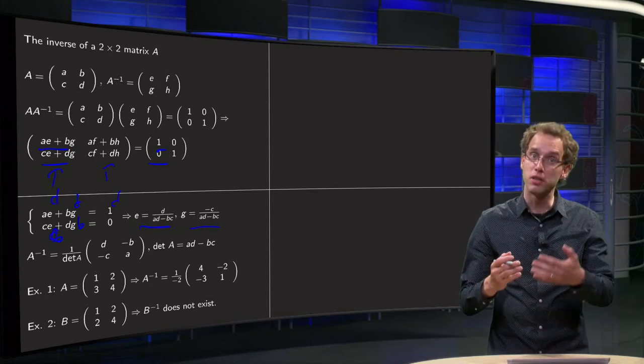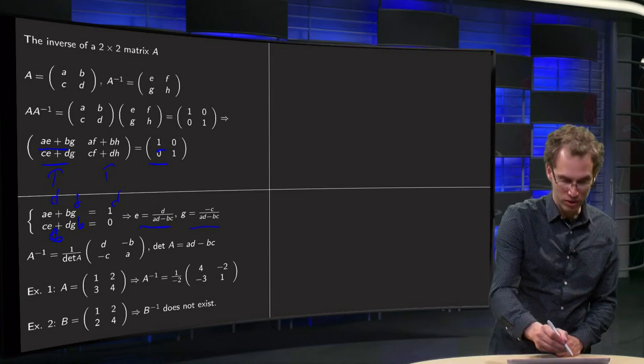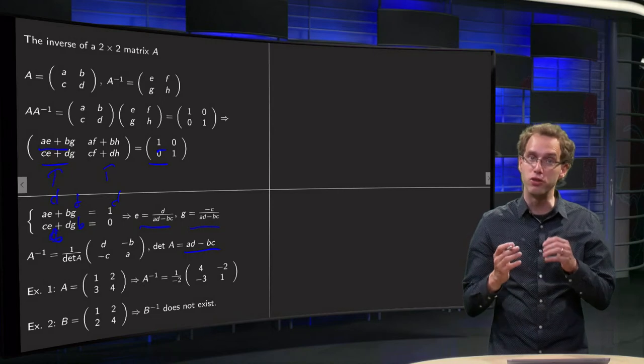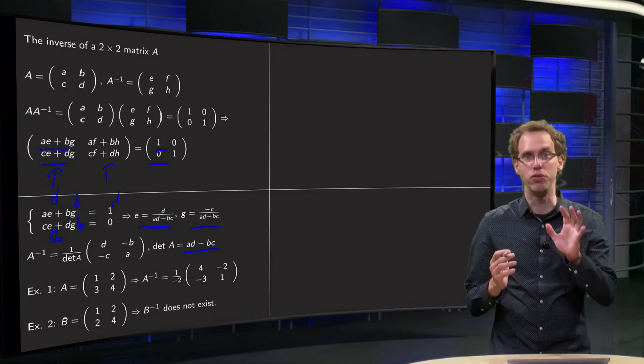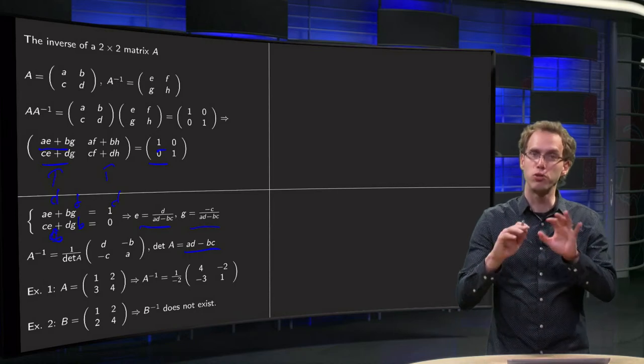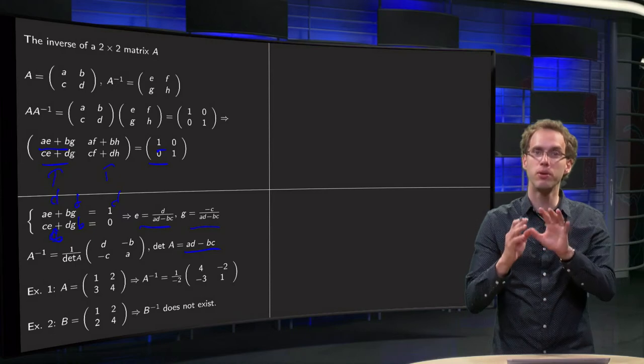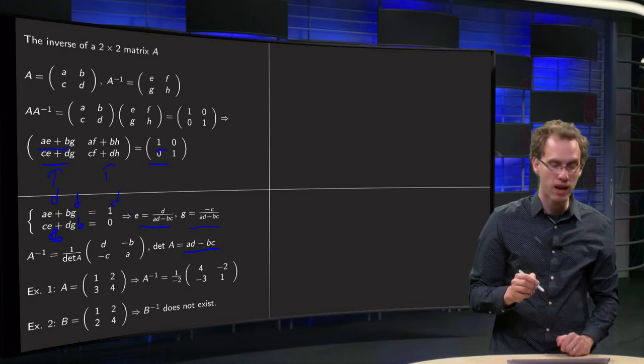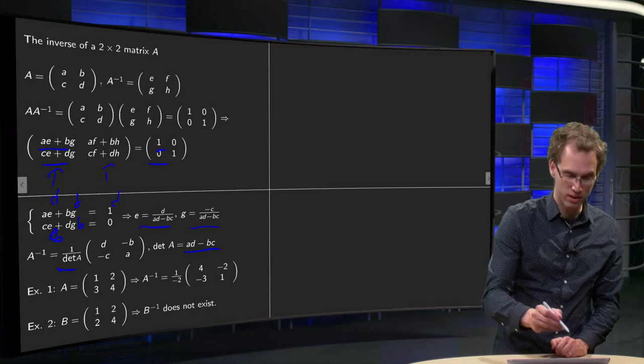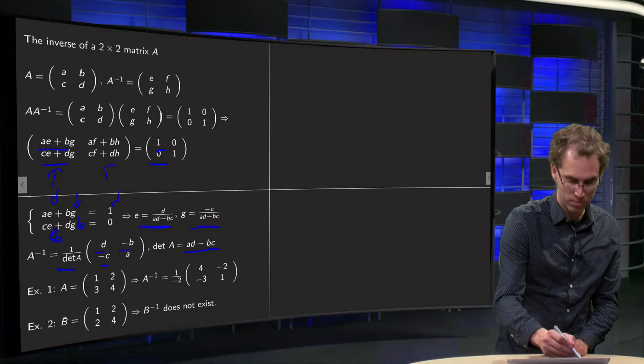And the same trick for f and h, and this way you can find a formula for the inverse. You call this quantity ad minus bc, which occurs everywhere. You call that the determinant of A. Later on, we will see much more about determinants of matrices. For now, for 2 by 2 matrix, the determinant is just a times d minus b times c. This number, and then your A inverse, you have to divide by the determinant. And here you get the d and the c as well over the whole, and for the other terms you get the minus b and a.